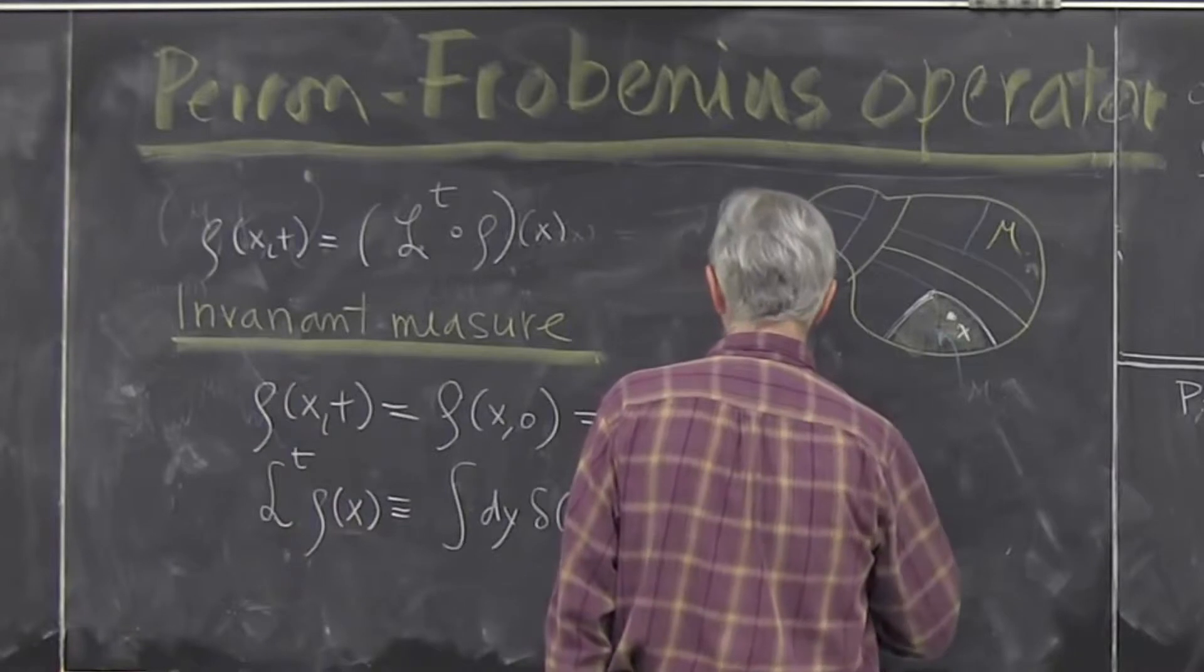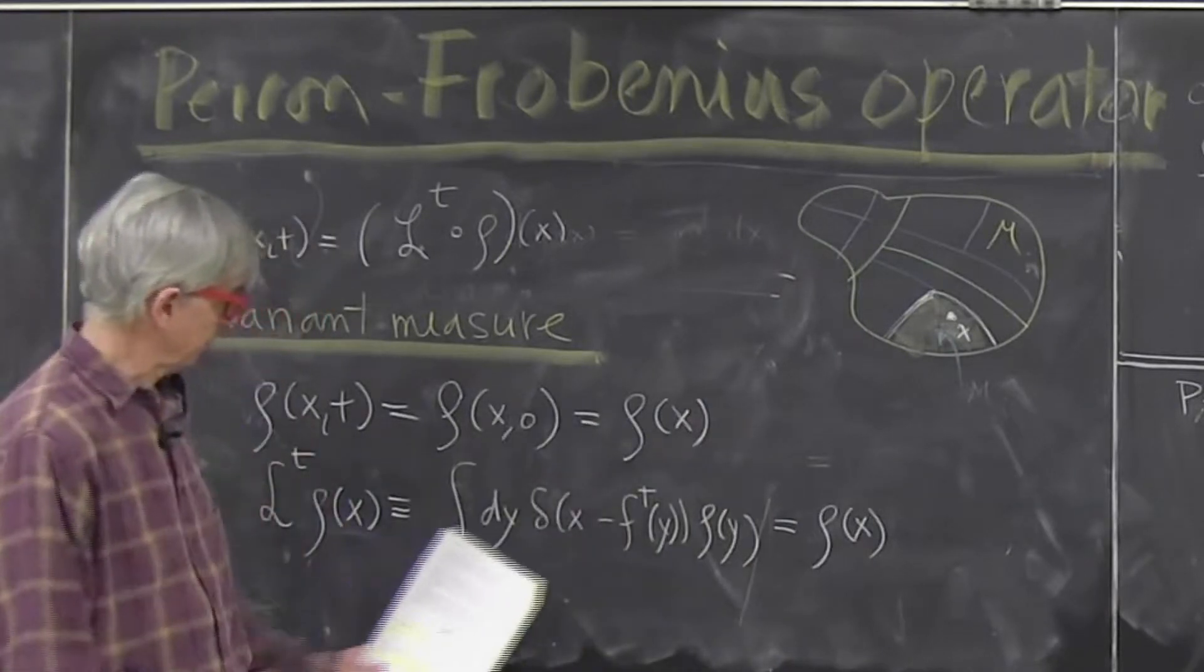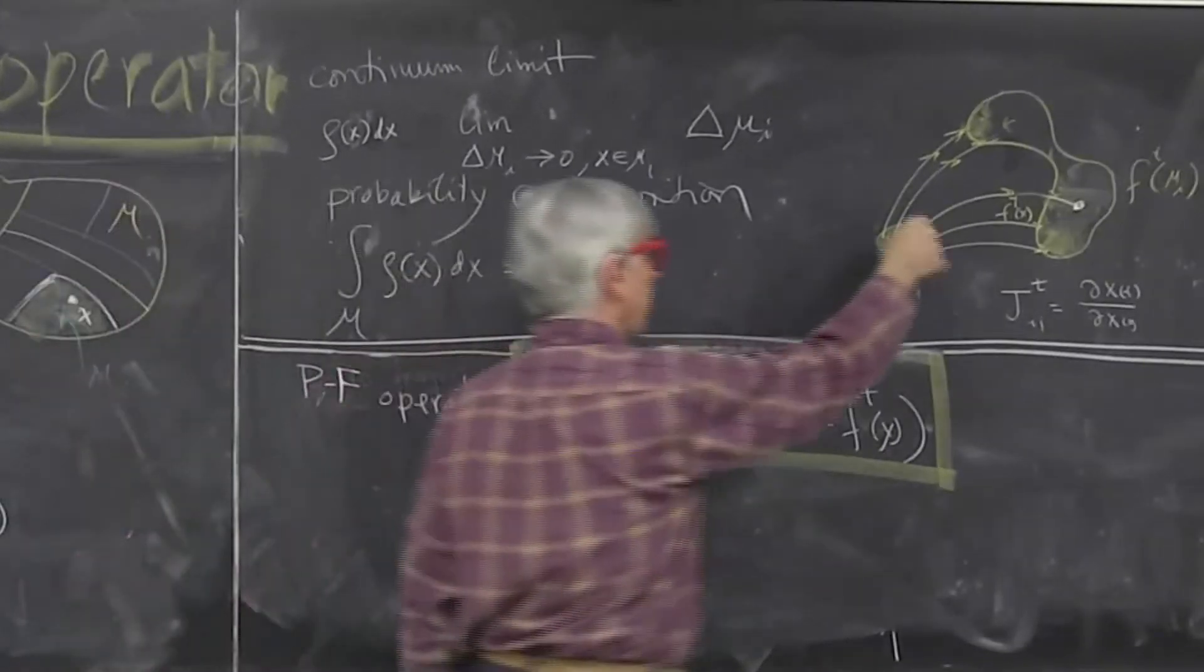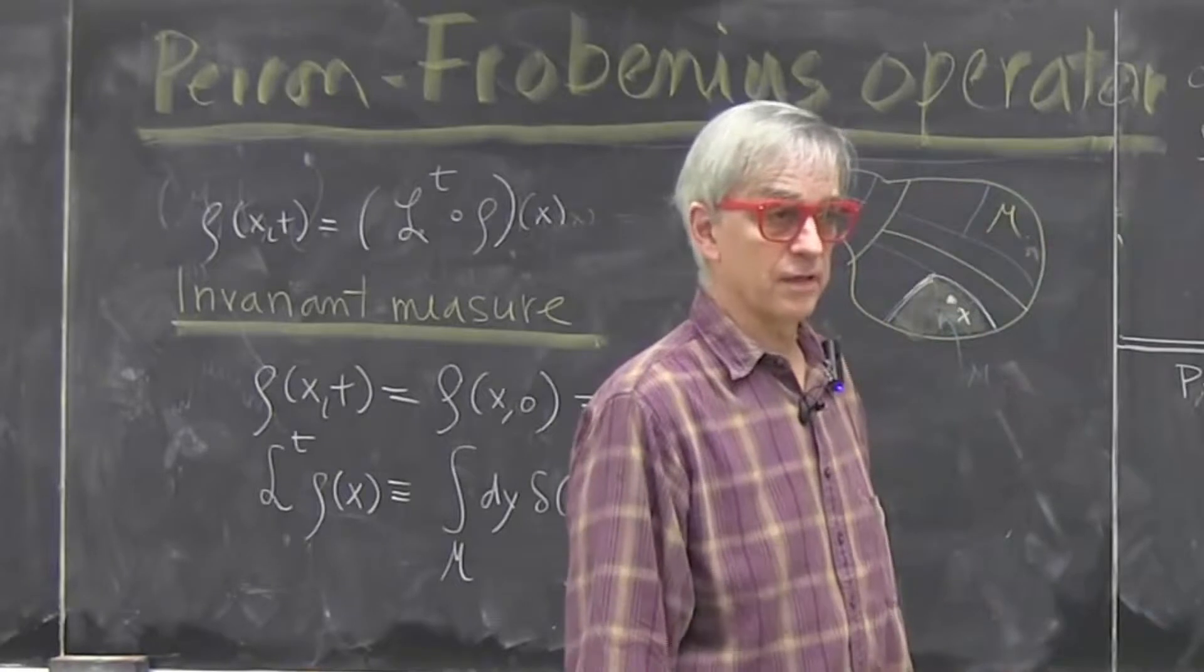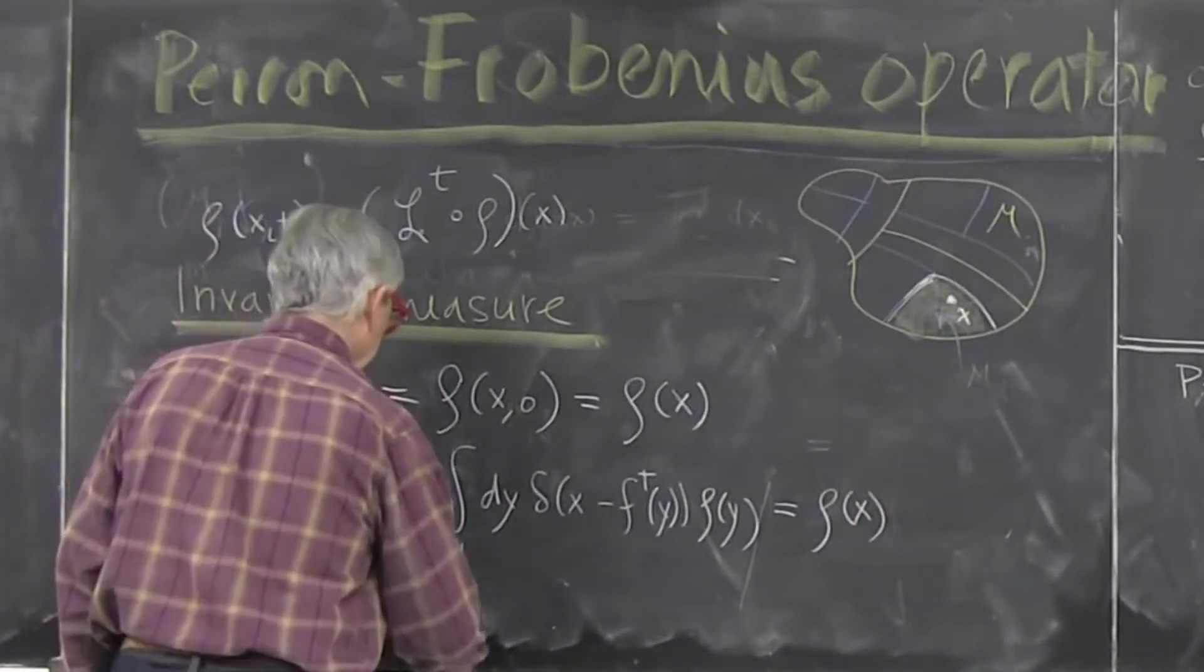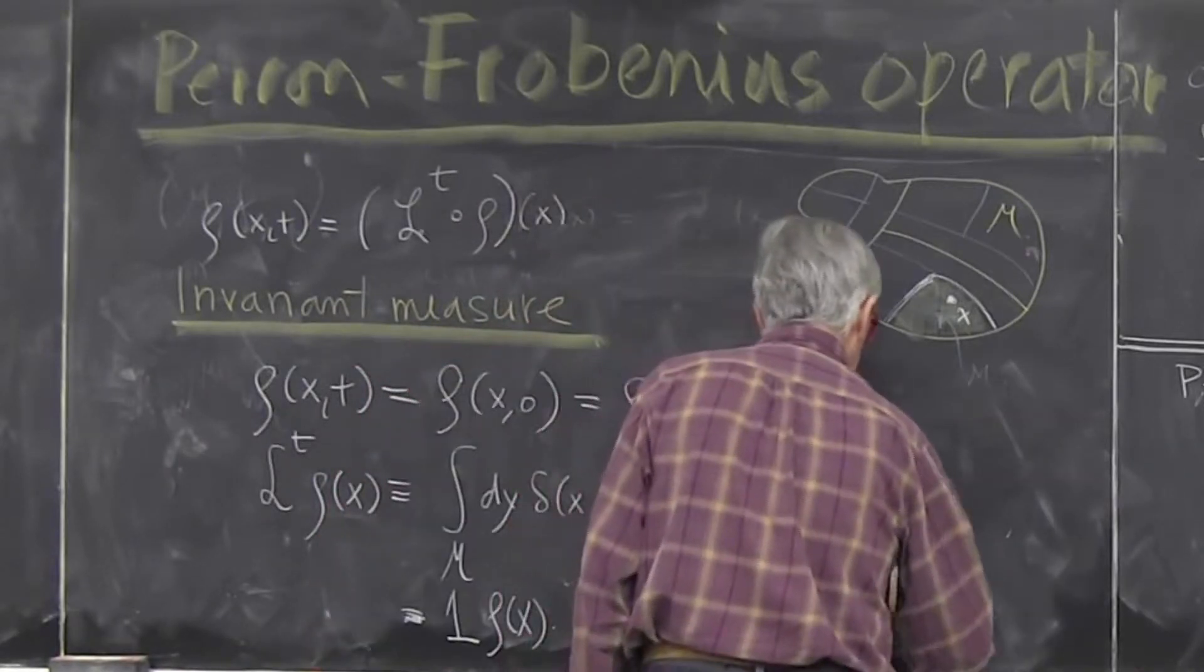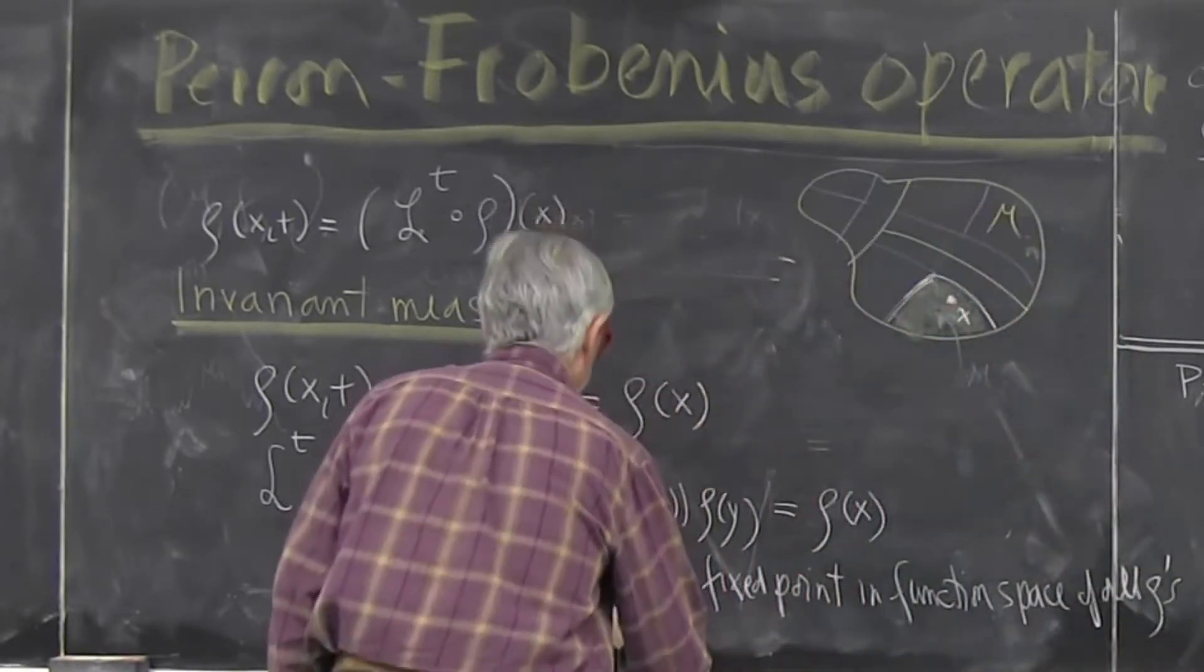And if the measure is invariant, we find out that this integration over whole state space, all it does is it rearranges the points around. At a given time, there's a volume and things get rearranged. But their local density doesn't change anyplace. But if you think of this as an operator, this is an operator that has a fixed point with eigenvalue 1. So rho x is a fixed point in function space. Rho x is eigenvalue 1.